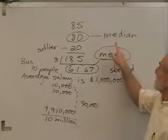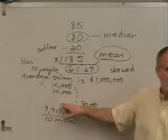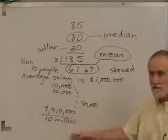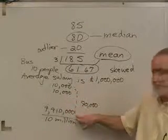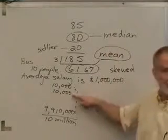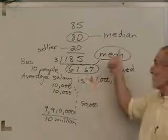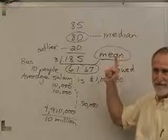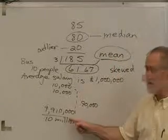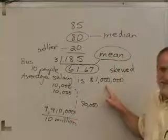So we have the median. Let's look at this bus example. If we put these in order, they're all 10,000 except for that biggest one, so the middle value is going to be 10,000, isn't it? That's a much more representative average of those 10 people on the bus than this million dollars is, isn't it?